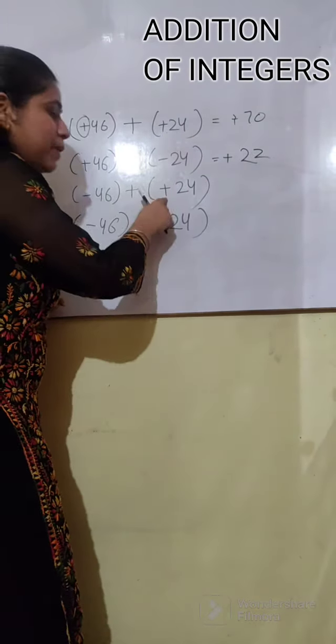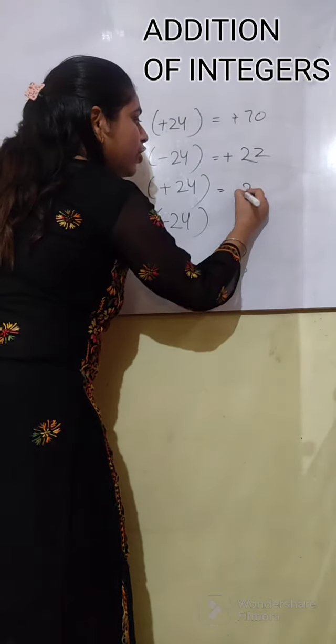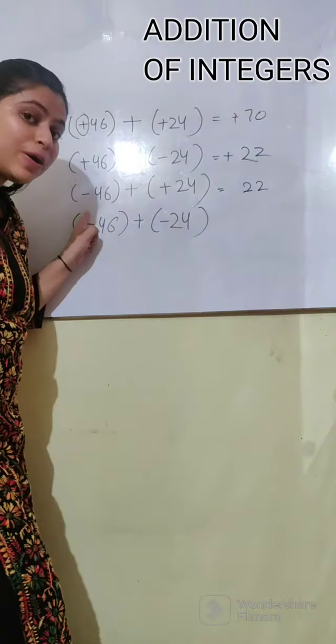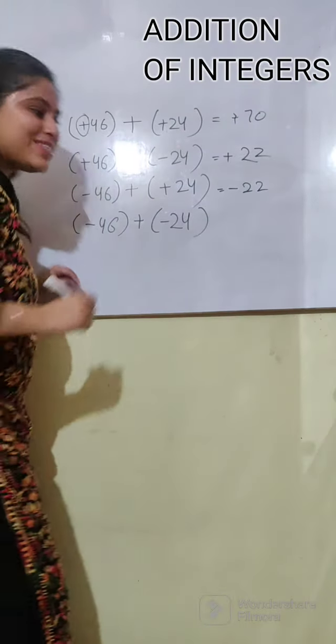Now, minus plus. What do we need to do? Minus. So, 46 minus 24? 22. But, which sign will it be? Minus. So, what will the answer be? Minus 22.